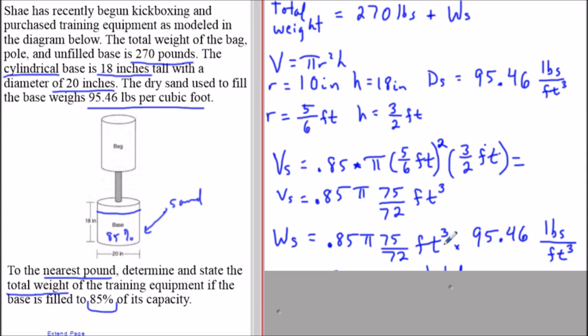At this stage, cubic feet cancels out with the cubic feet in the denominator, and the only unit that's left is pounds, which makes sense because we're calculating the weight of the sand.